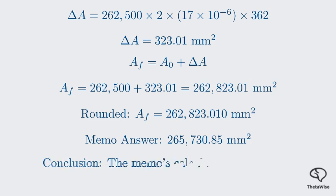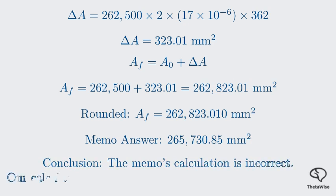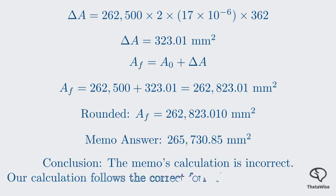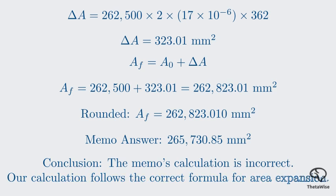Rounding to three decimal places, the final area is 262,823.010 mm². The memo provided an answer of 265,730.85 mm², which appears to be incorrect. Our step-by-step calculation follows the correct formula for area expansion.